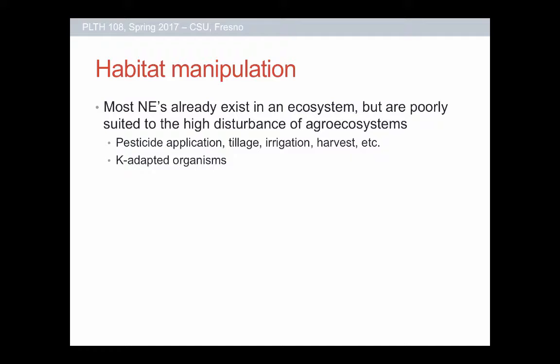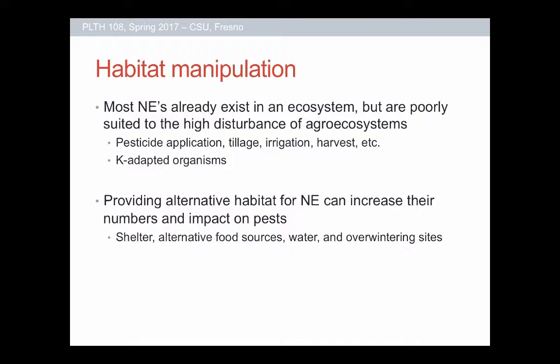We can also make the habitat better by trying to increase the things within the ecosystem that natural enemies like. Conservation is all about boosting the natural enemies you already have. They exist in agroecosystems but are often kept at low levels because they're not well adapted to those conditions. Agroecosystems have a ton of disturbance — tillage, harvests, different crops, irrigation regimes, pesticides — which favors R-adapted pests that move into disturbed habitats and reproduce quickly. But many natural enemies are more K-adapted and need stable habitats to survive.